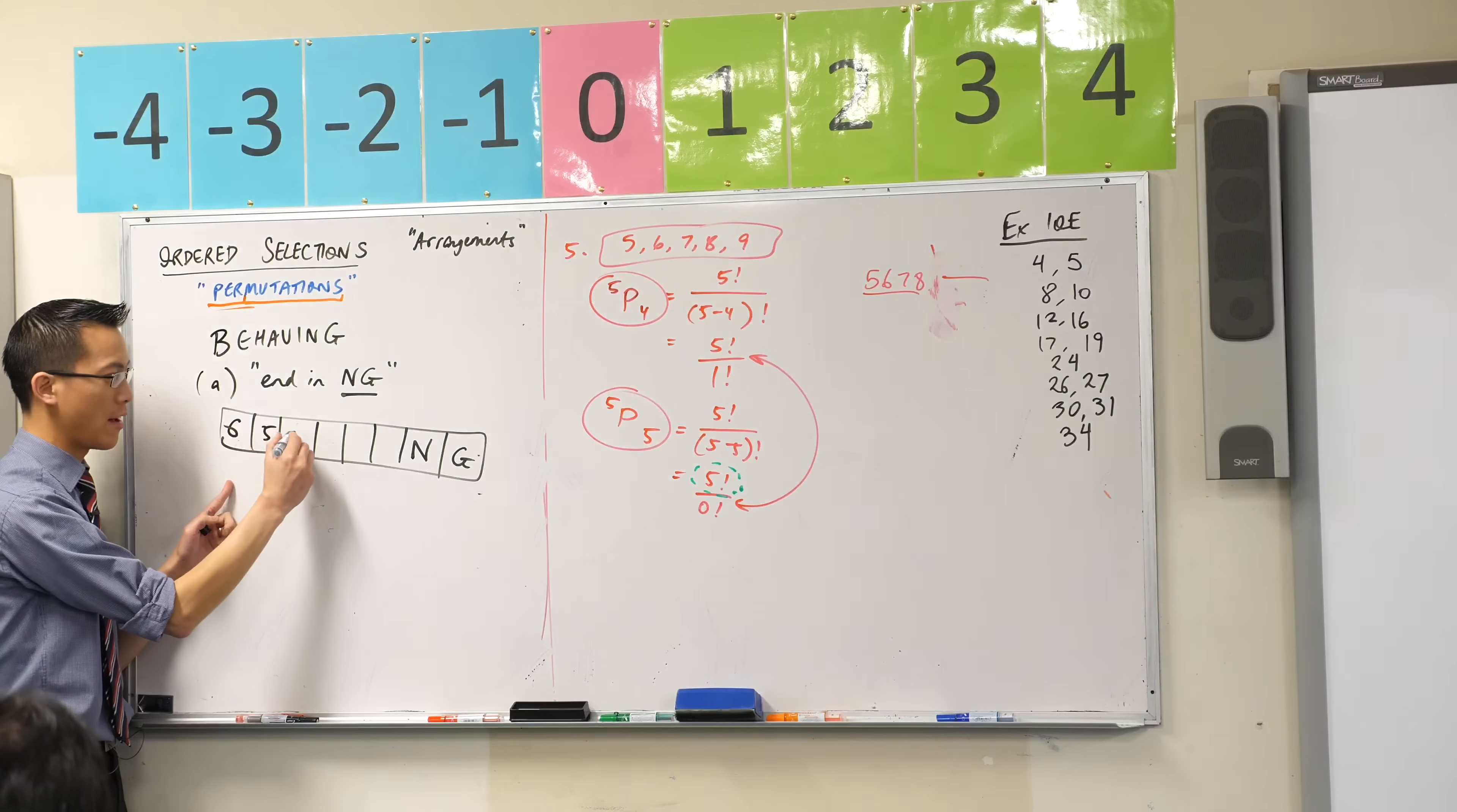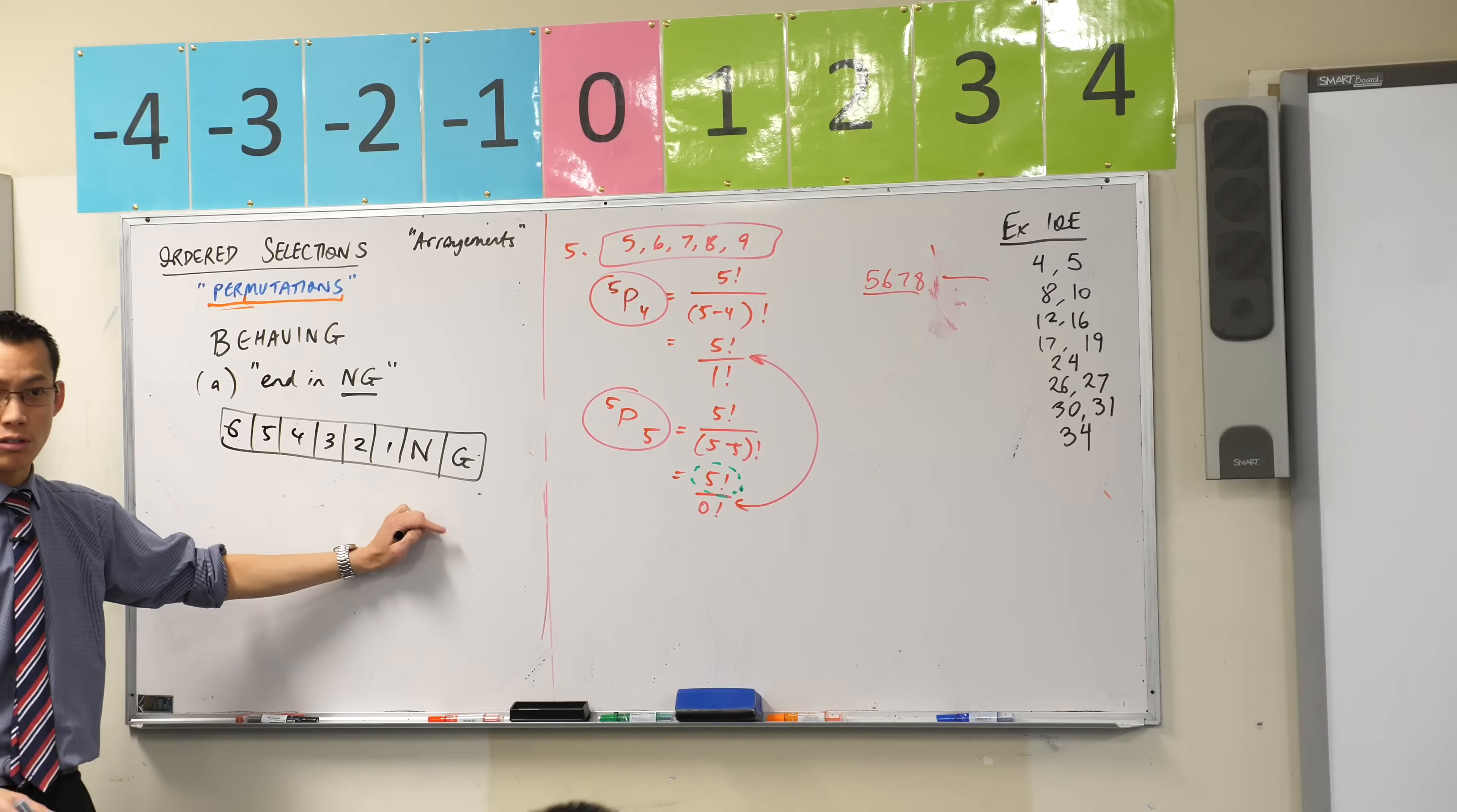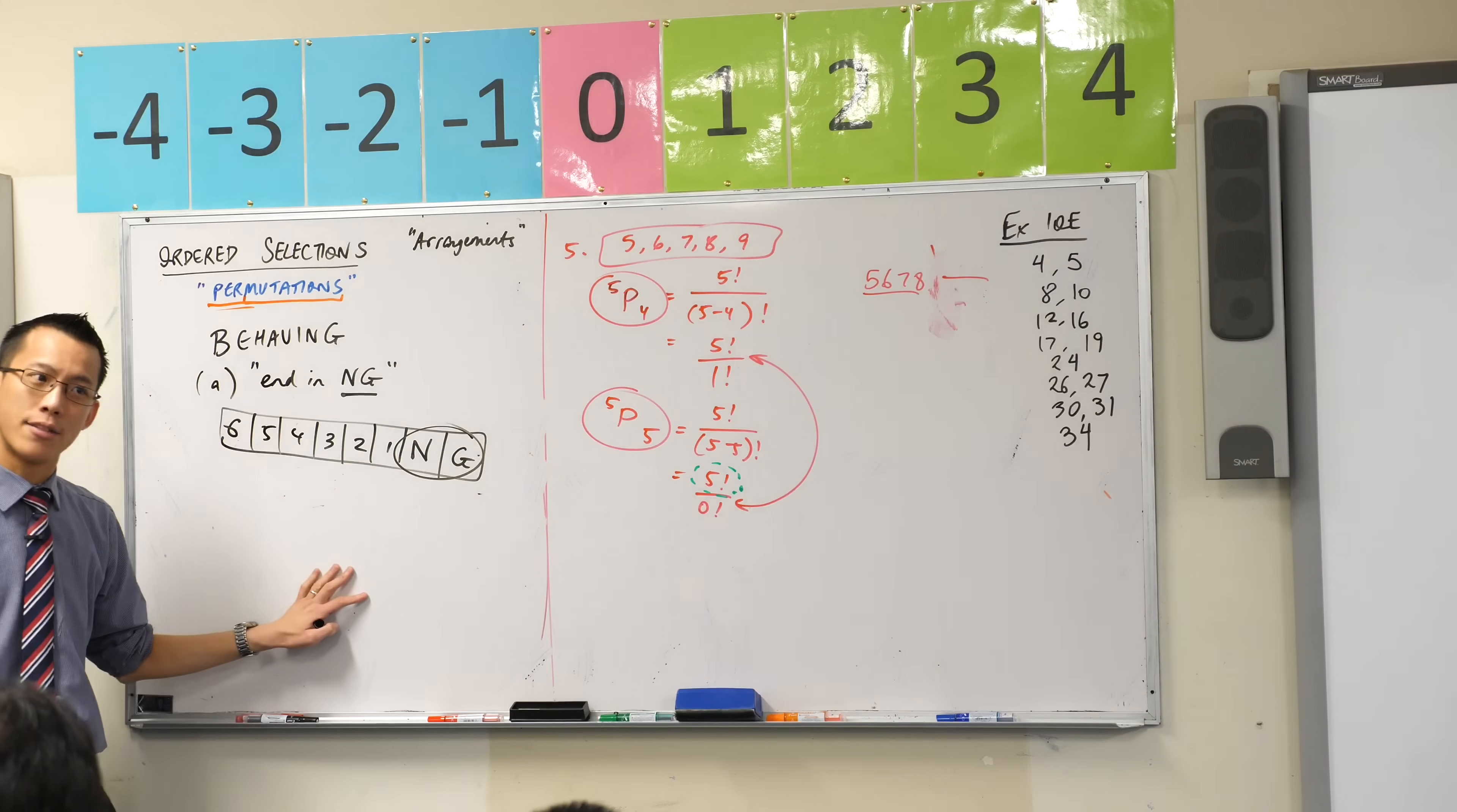And now I would say five, and then four, and then three, and then two, and then one. Does this make sense? So this is going to be 6 factorial or 6P6, if you like. And that's going to be all the options once you've taken these out of the running. Does this make sense?